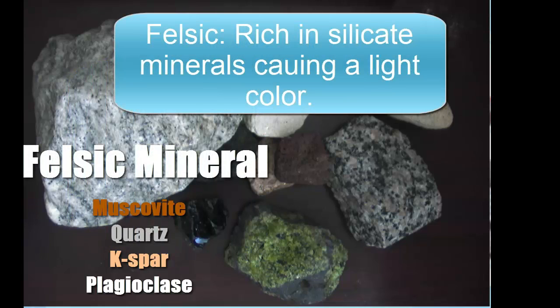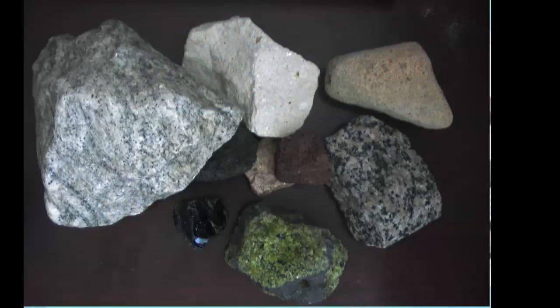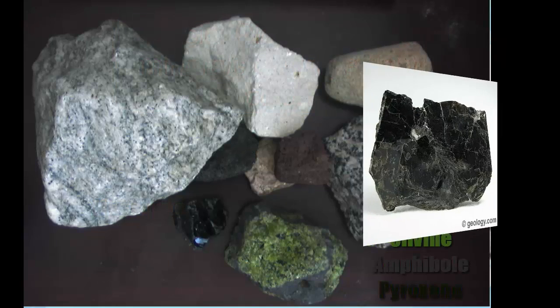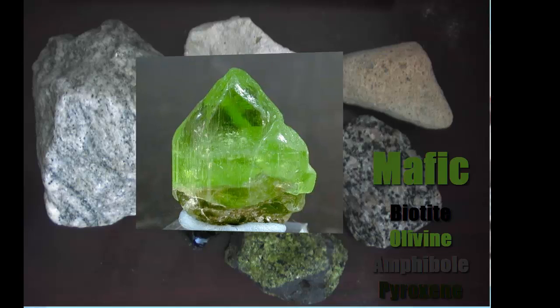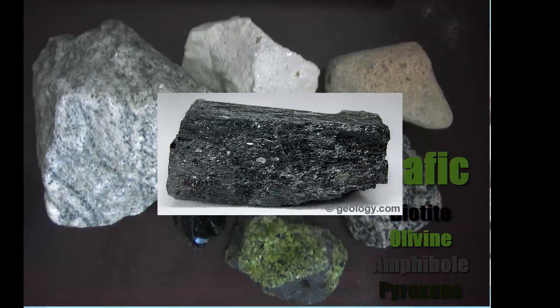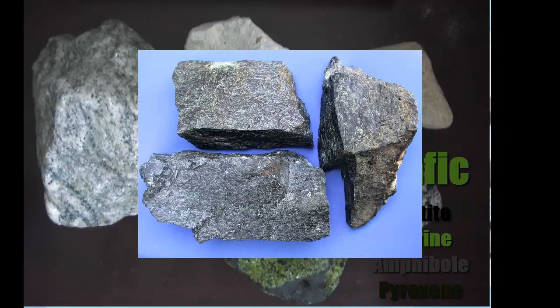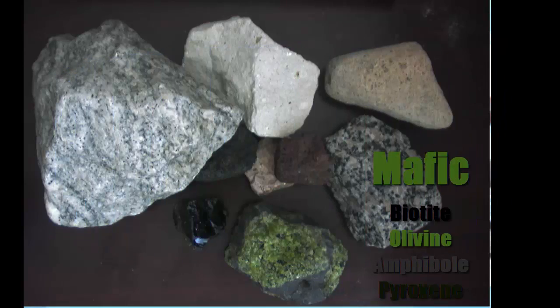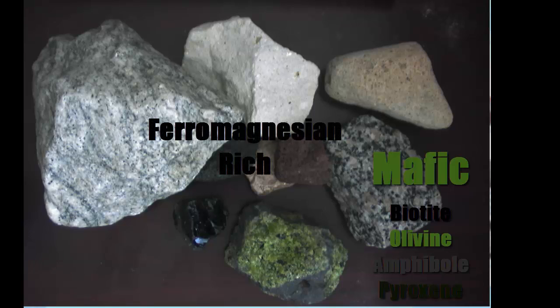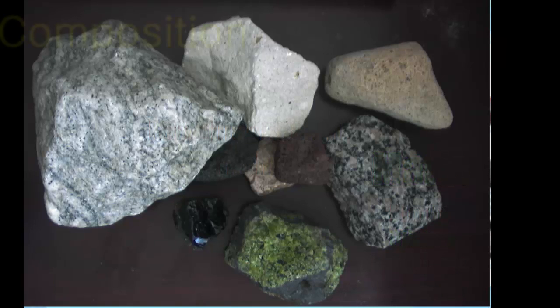And you also have four darker colored mafic minerals. We've got biotite, you've got olivine, amphibole which we may have called hornblende in the last unit, and a new one known as pyroxene. Now, these are dark in color because they're ferro-magnesian rich, which means they have lots of iron or magnesium in them. And that gives them that darker color.